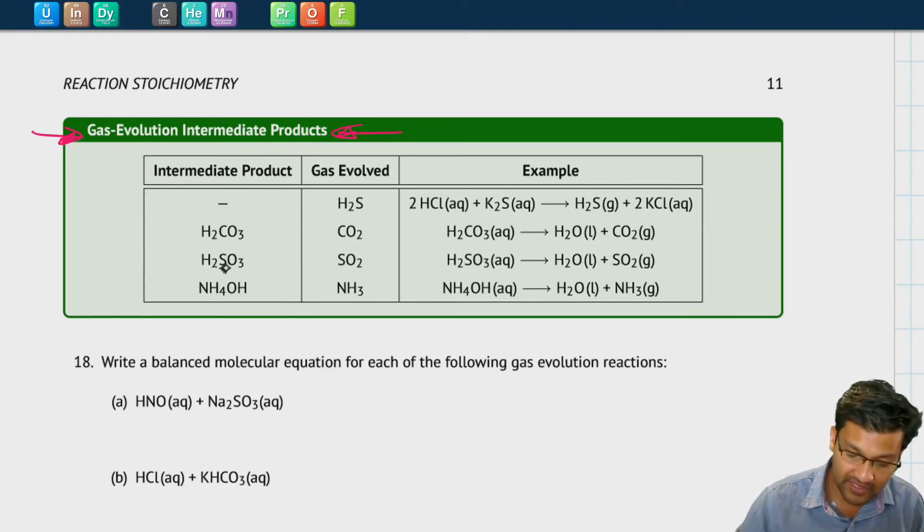Similarly if you see H2SO3, that will break down into water and sulfur dioxide and so you'll see bubbles of sulfur dioxide gas. And similarly if one of the products that you see in an equation is NH4OH, that will break down into ammonia gas and water.